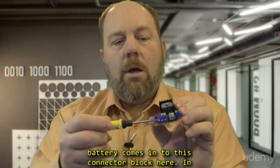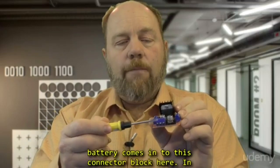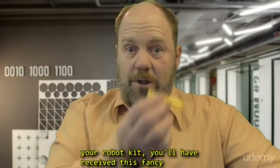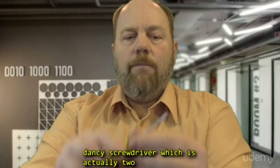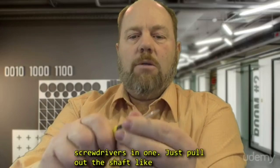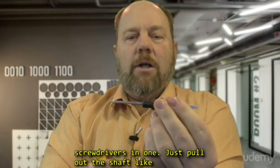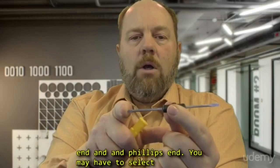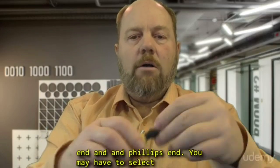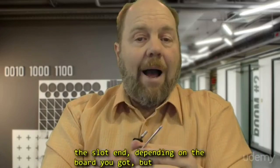Power from your battery comes into this connector block right here. In your robot kit, you'll have received this fancy screwdriver, which is actually two screwdrivers in one. Just pull out the shaft like this, and you'll see you have a slot screwdriver and a Phillips end.